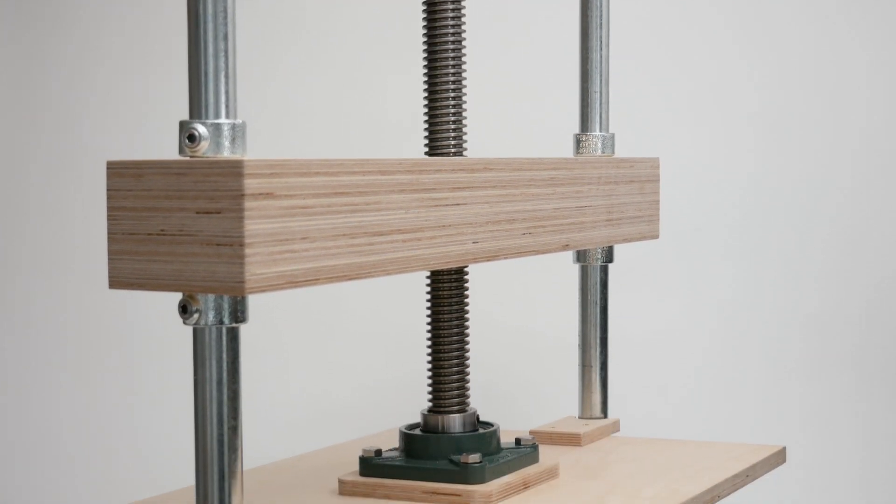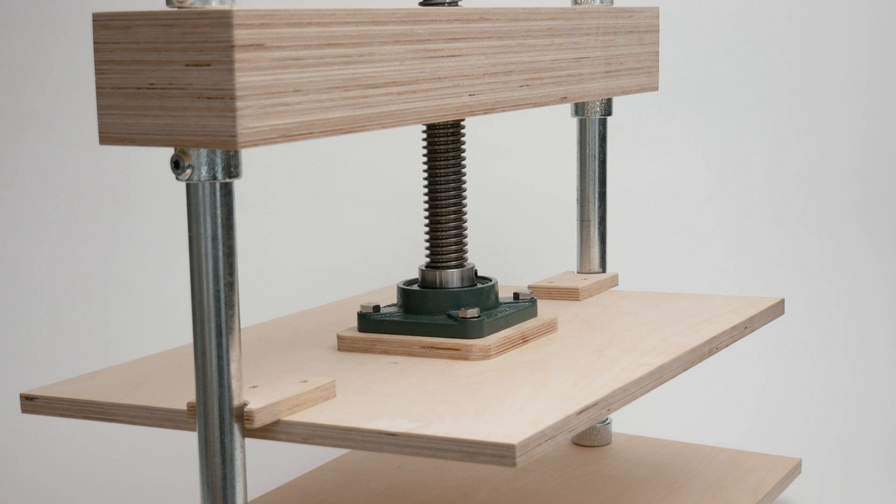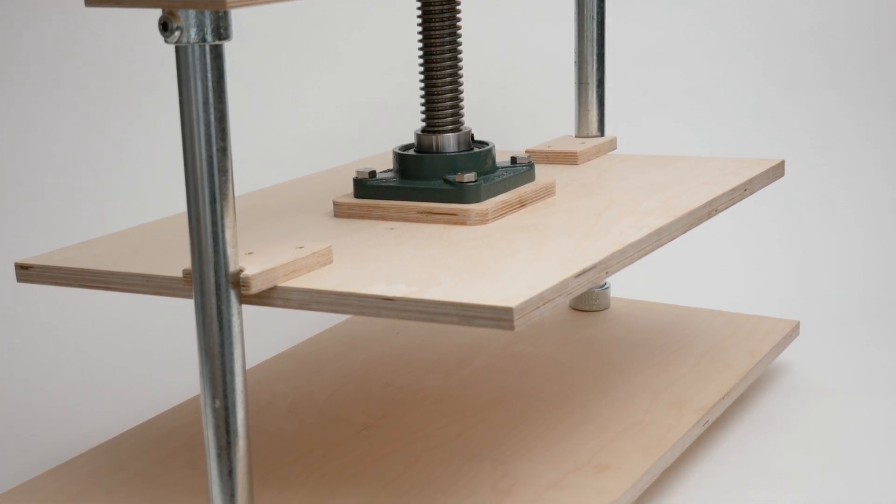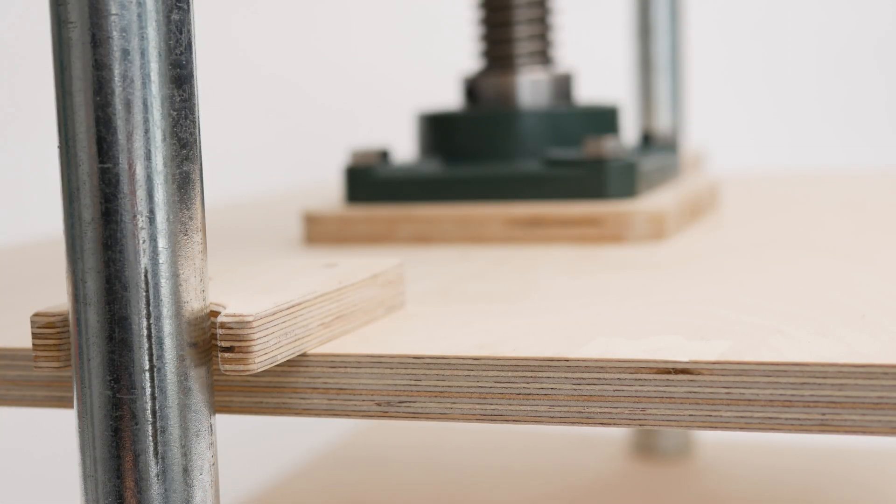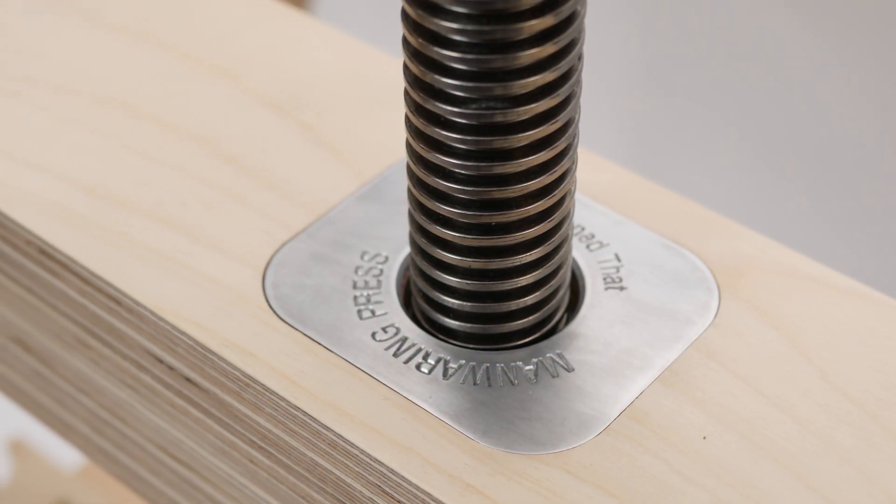I actually went with an unvarnished look. I did test a bit of plywood with some Osmo oil and I didn't really like how it darkened the plywood. I really did like the contrast between the unvarnished look and the cold steel.